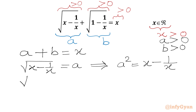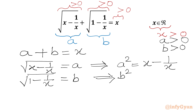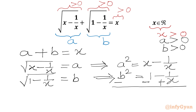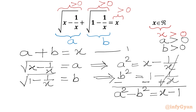Now I will write the square root of (1 minus 1 over x), which is our substitution b. Squaring both sides gives b squared equal to 1 minus 1 over x. We will subtract the second equation from the first — the sign changes to positive — and the plus and minus 1 over x terms cancel out. We get a squared minus b squared equal to x minus 1. Let's call this our first equation.